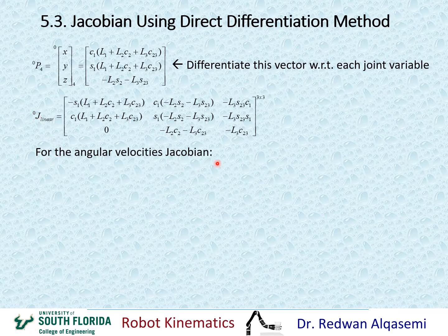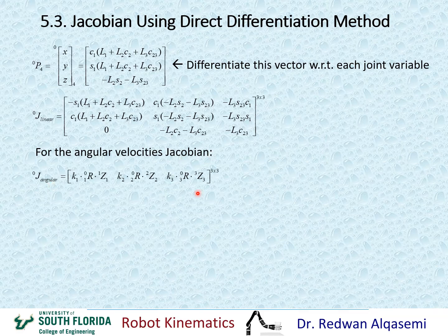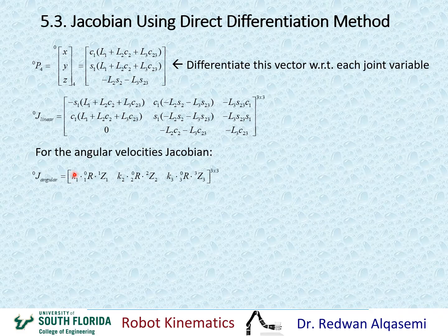For the angular velocity Jacobian, we cannot use direct differentiation to obtain angular velocities, because a rotation matrix cannot be directly differentiated the way we differentiate X, Y, and Z. Instead, we use a different method that defines the angular Jacobian in reference to frame 0. Each expression becomes a single column — column 1, column 2, and column 3. K1 is always 1 for revolute joints and 0 for prismatic joints, and we multiply that by R01 (taken directly from T01) with Z11 always being [0, 0, 1].